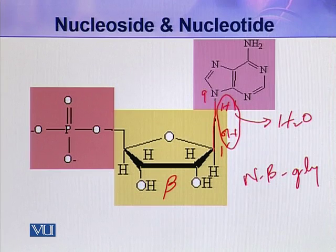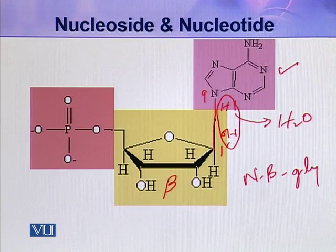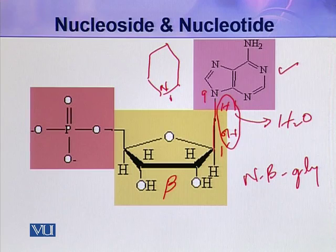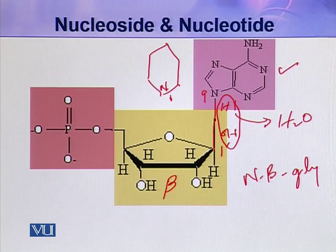If the nitrogenous base is a purine, it will be attached from its nitrogen 9 to the 1 prime carbon of the pentose. If the nitrogenous base is a pyrimidine — which has nitrogen number 1 — it is attached from nitrogen 1 to the 1 prime carbon of the pentose.